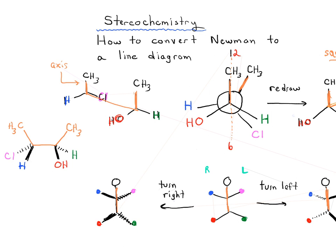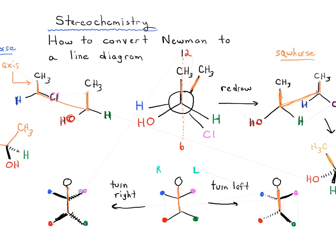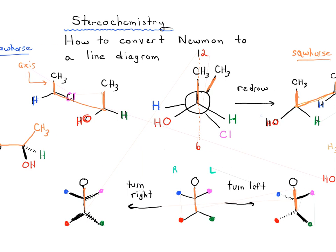So those are two examples of how to convert a Newman projection into a line diagram. I'd suggest drawing the sawhorse first, because it makes the carbon-carbon bonds clearer, and then continue the rotation so that groups on the left-hand side point out of the page. It's the same skill as imagining a person rotating towards you, keeping track of what's in the plane of the page, out of it, or behind it. Once you practice this, it shouldn't be too difficult a skill to acquire. I hope you find this helpful.